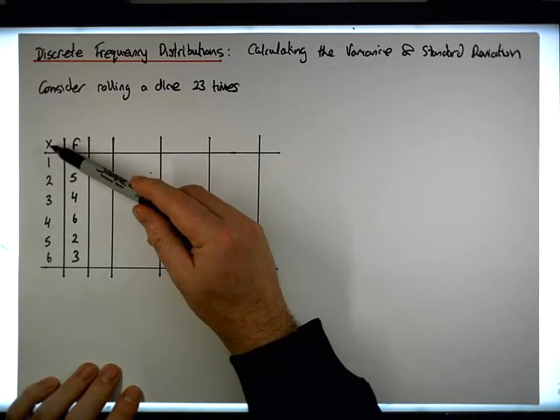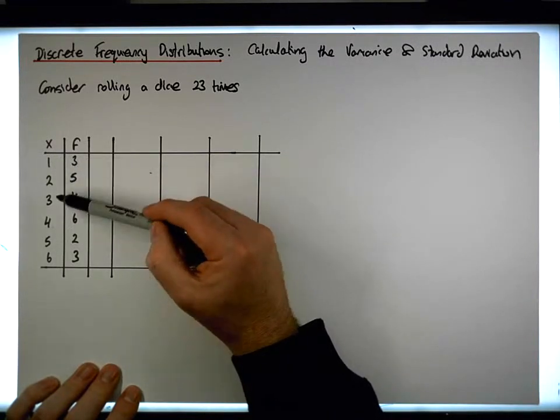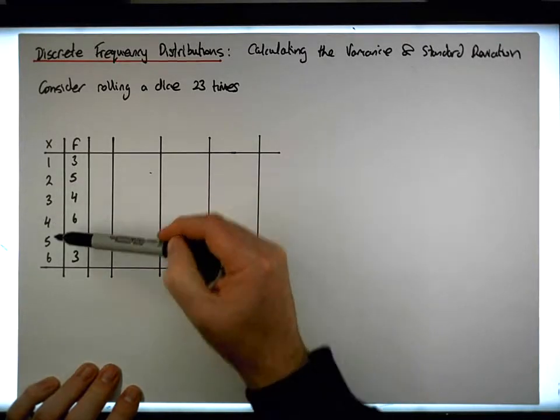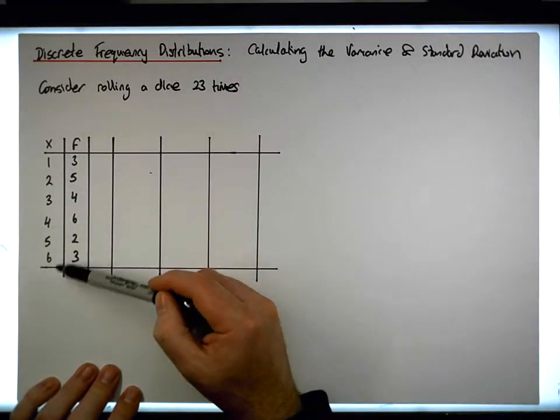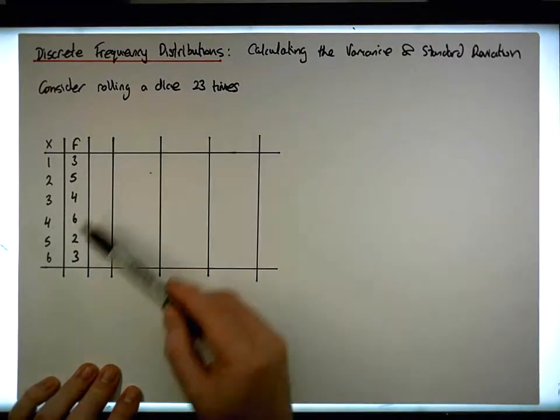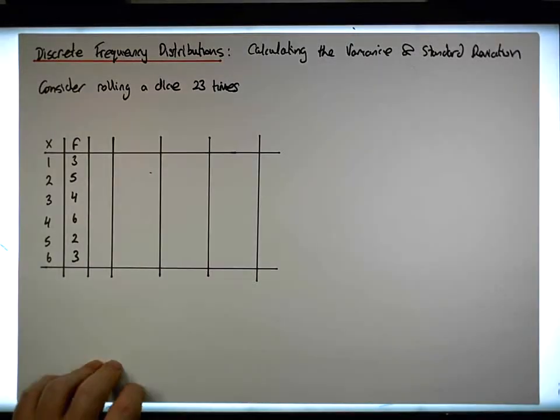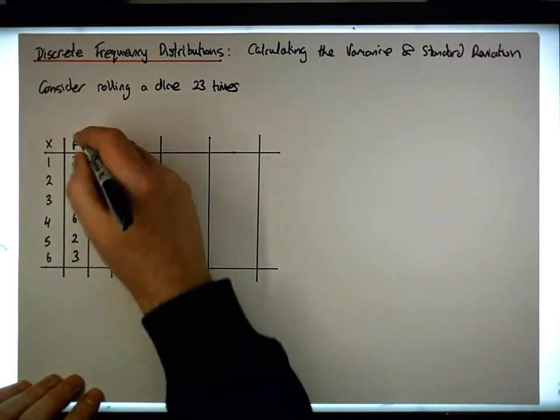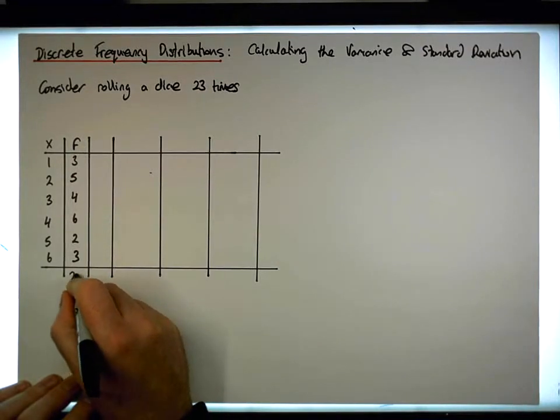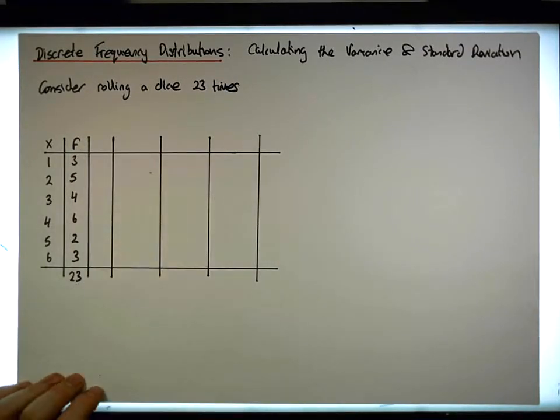So for example, a 1 appeared on the dice 3 times, a 2 appeared 5 times, a 3 4 times, a 4 6 times, the 5 appeared twice, and out of the 23 rolls of the die, the 6 appeared 3 times in total. So the total frequency is 23, representing that we rolled the die 23 times.